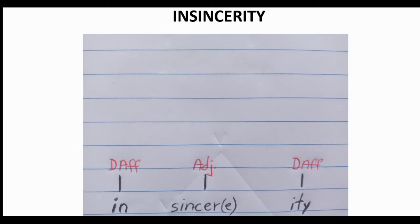'Insincerity' is a little more complex. The first thing you need to do is to break down the word into its morphemes. Here we have three morphemes: the first one is the derivational affix 'in-', the second is the adjective 'sincere' which is the root, and finally you have the derivational affix '-ity'. The second step is to label each morpheme — derivational affix 'in-', adjective 'sincere', and derivational affix '-ity'.